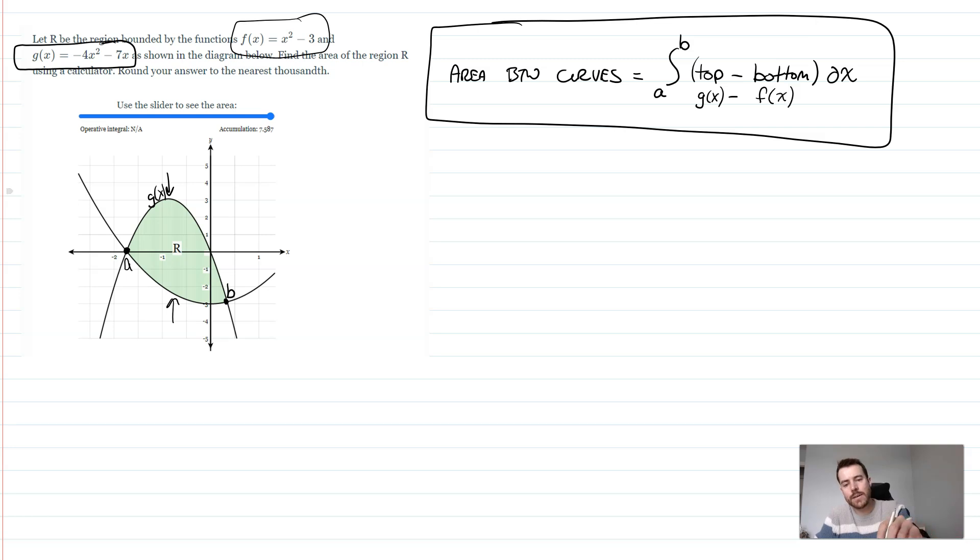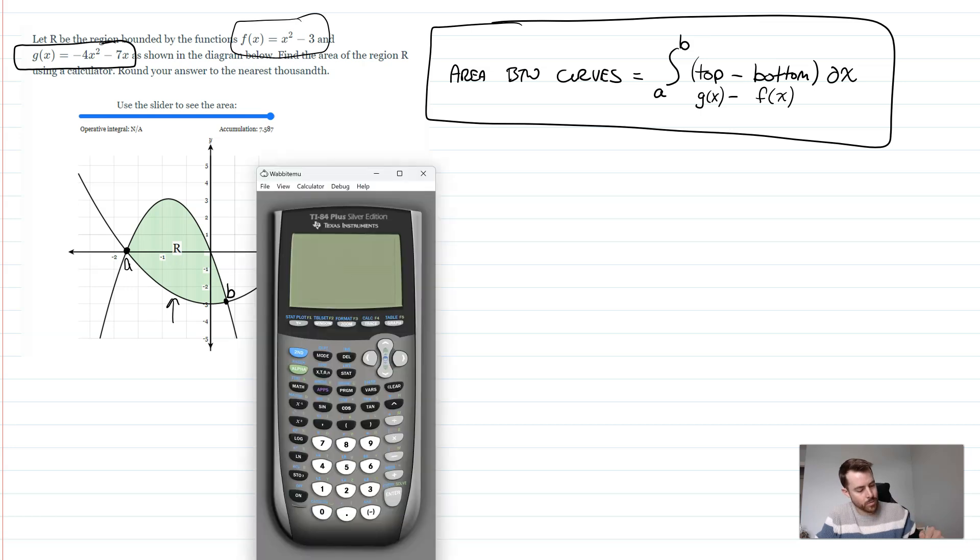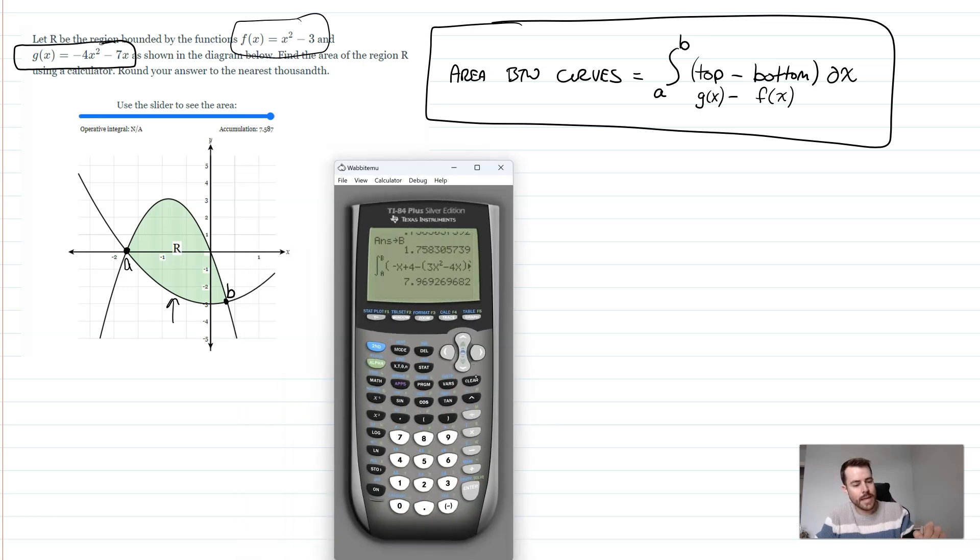Now, to make this really easy, let's get those intersection points, and we're going to do this right in our calculator. So to get these intersection points, we're going to go to y equals, and we're going to graph this. I like to put the top function as y1, so I'm going to put g(x) as y1. So y1, we're going to do -4x² and then -7x. And then under y2, we're going to put our bottom function, or f(x) here, which is x² - 3.